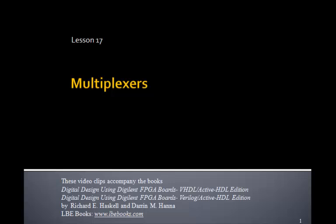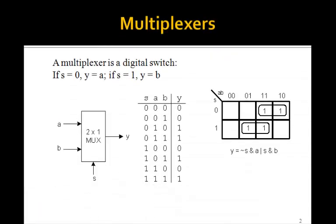This is lesson 17 on multiplexers. Now a multiplexer is a digital switch in which the output y is either equal to a or b, depending upon the value of this input s. s is called the control line, and if s is equal to 0, y is the same as a, and if s is equal to 1, y is the same as b.